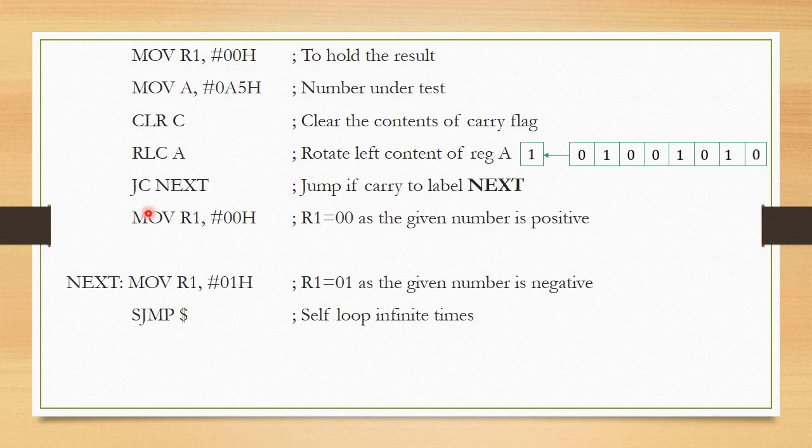You might wonder why am I loading R1 with 00 when R1 was already containing 0. You can skip this step as well. But it's a good practice to update whatever we want, because we might have accidentally used this particular register for some other operation. Just to be clear, we are resetting the value as per our requirement. Once after doing this, should I again run this statement?